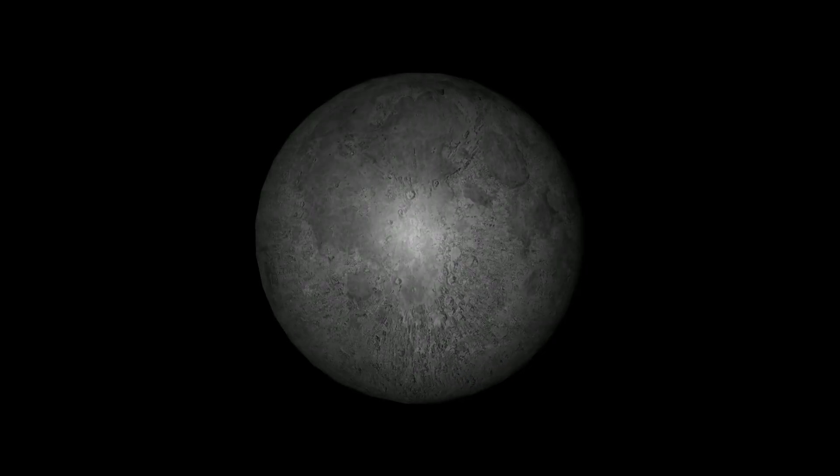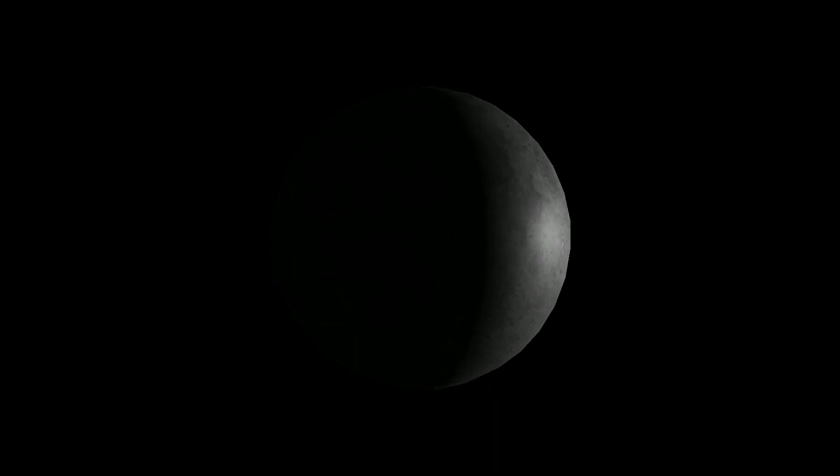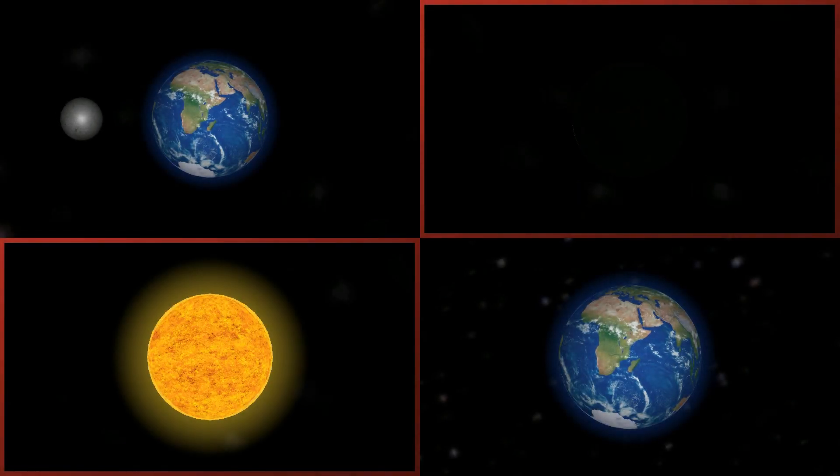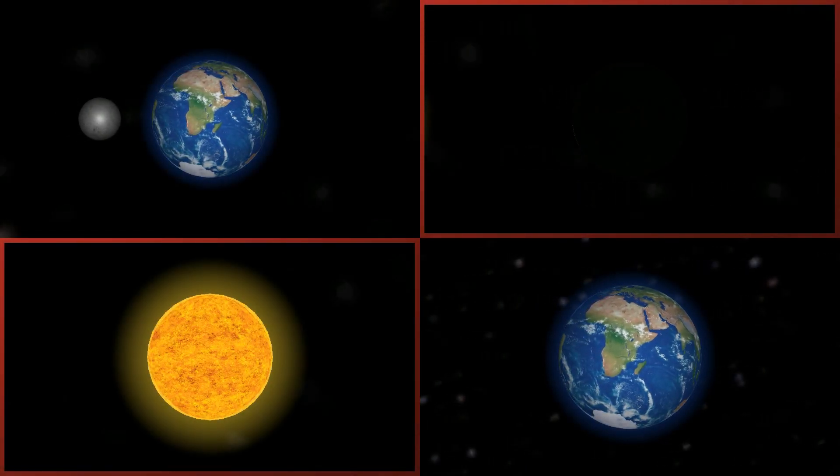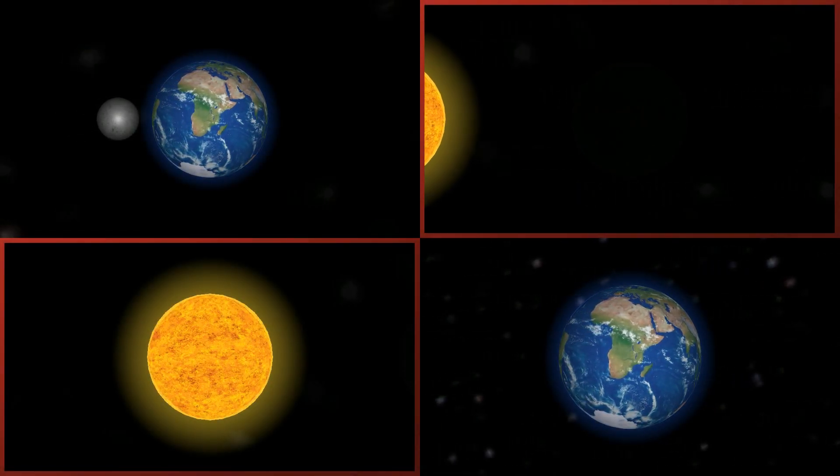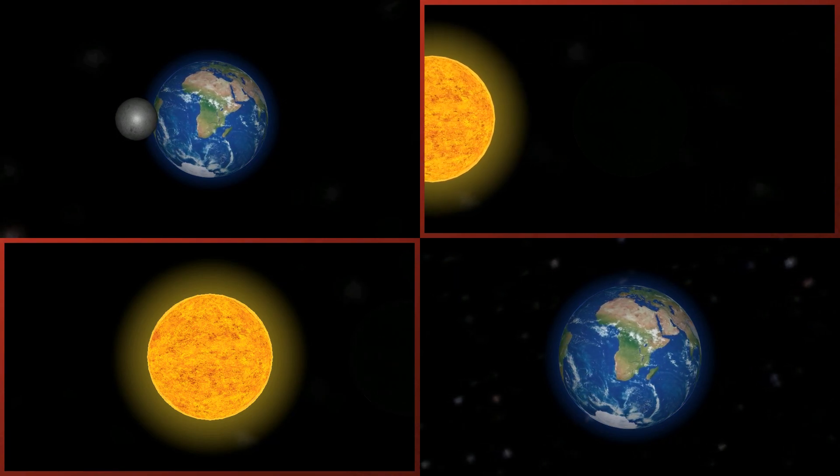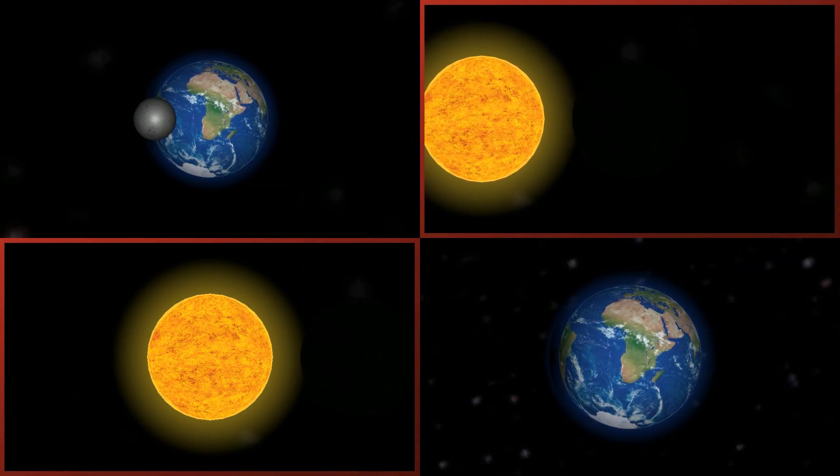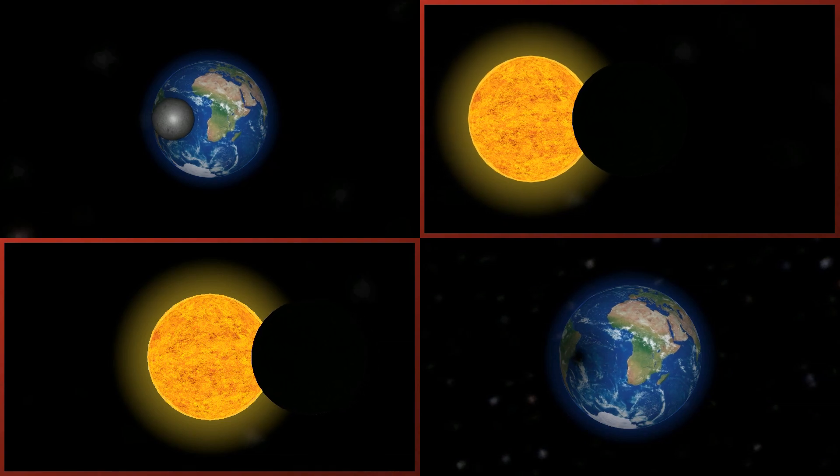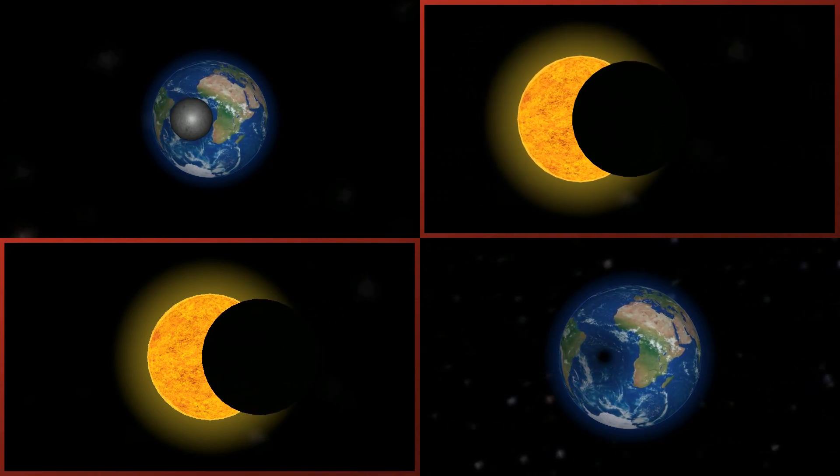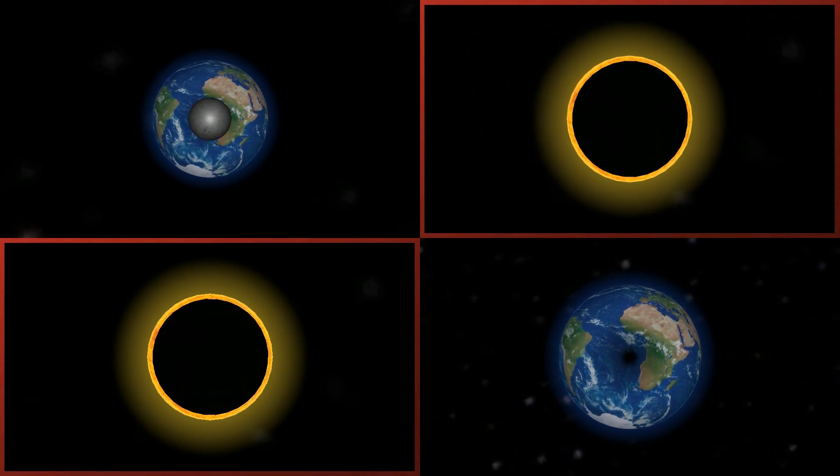We now combine all these factors and look at four views simultaneously. The earth from the sun top left, the moon from the earth top right, the sun from the earth bottom left, and the earth from the moon bottom right. We start off with the total eclipse of the sun, where the moon moves precisely in between the earth and the sun.